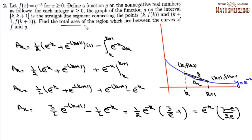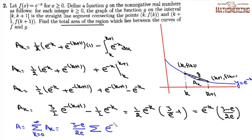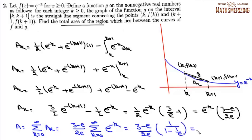The total area is the sum of A_k for k from 0 to infinity: Σ e^(−k) · (3−e)/(2e). This is a geometric series with ratio 1/e, so the sum equals (3−e)/(2e) · 1/(1 − 1/e). Simplifying, the total area is (3 − e) / (2(e − 1)).